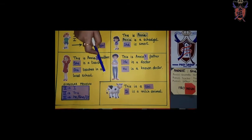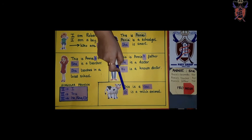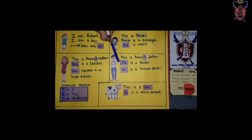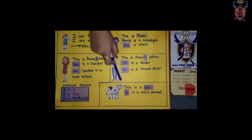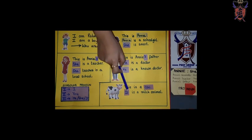Yarni, agar koi janver hooga, ya koi vashtu hooghi, to us ke lihe haum it use karenge. Boy ke lihe he, girl ke lihe she, and objects ya animals ya birds ke lihe it.